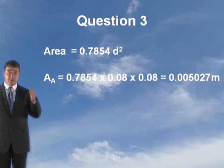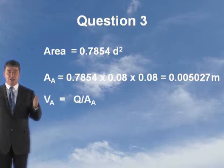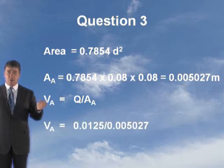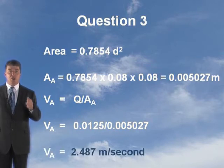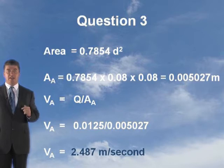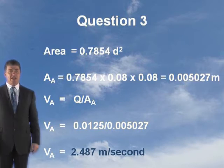Therefore, the velocity at A, when you bring Q in, VA equals Q divided by AA. Velocity at A is 0.0125 divided by 0.005027. The velocity at A is 2.487 metres a second. So we've worked out the velocity at A.